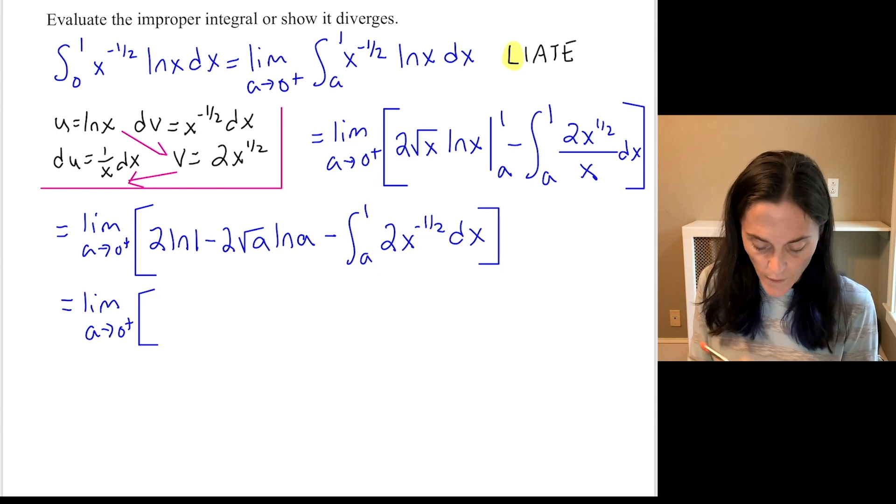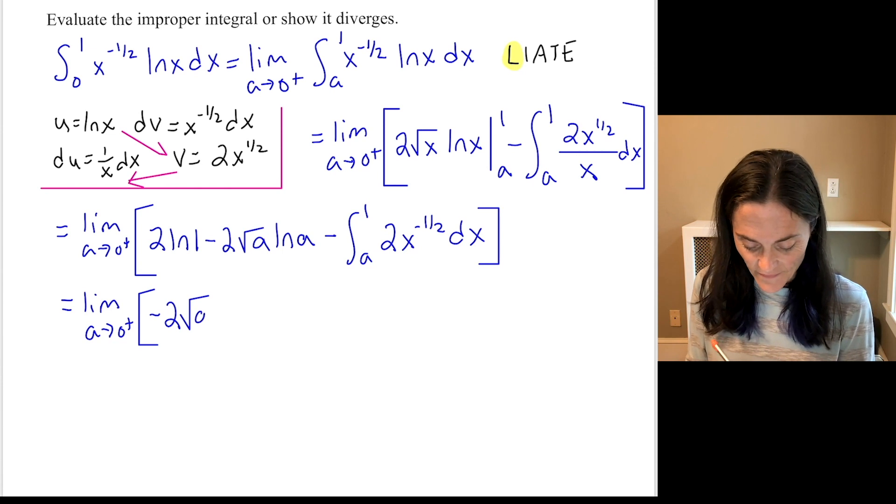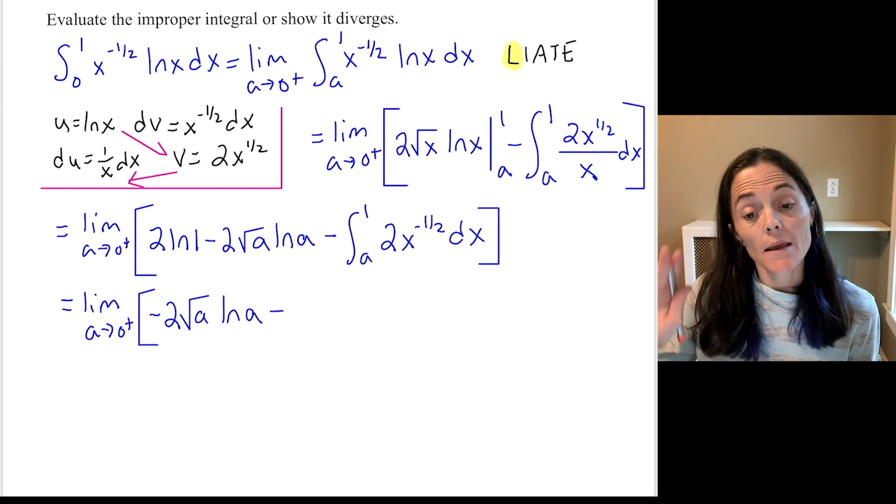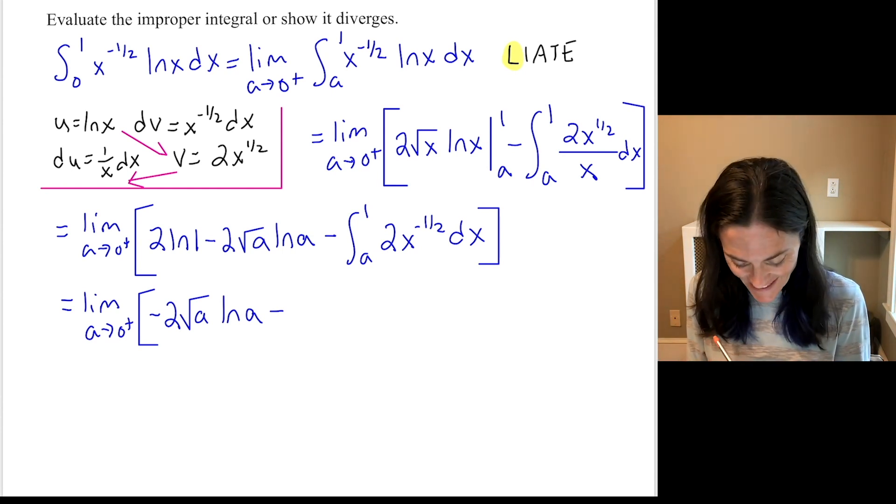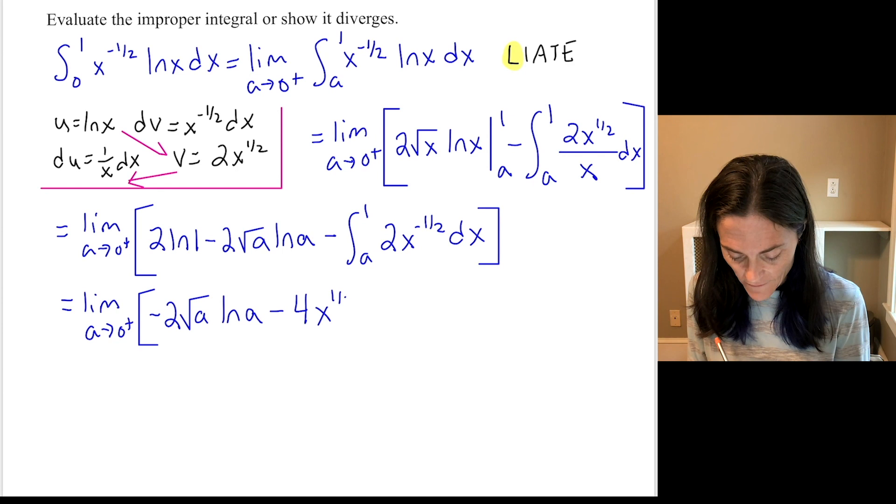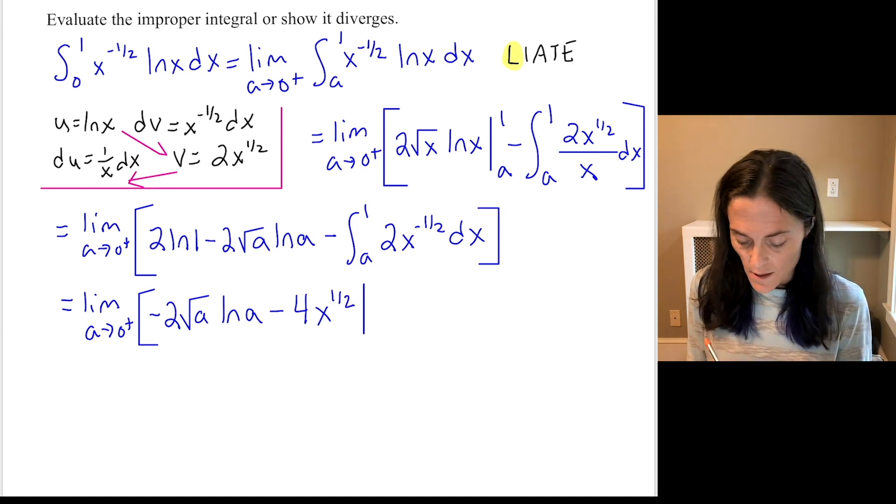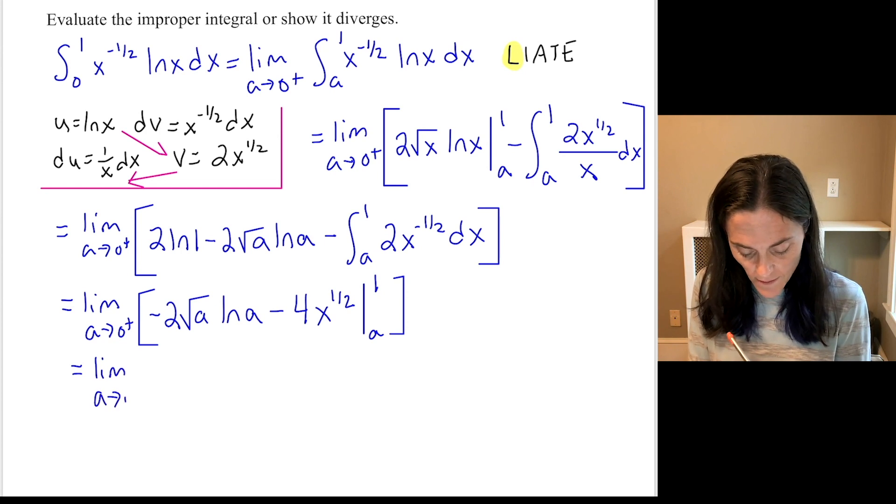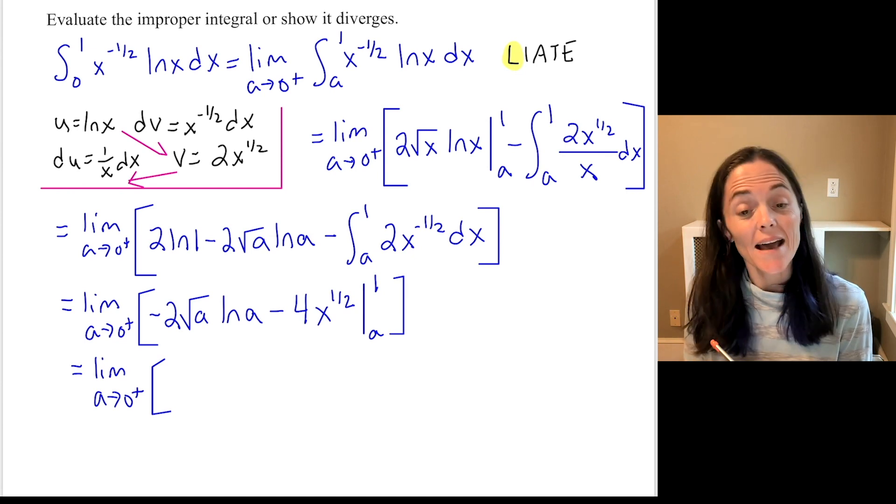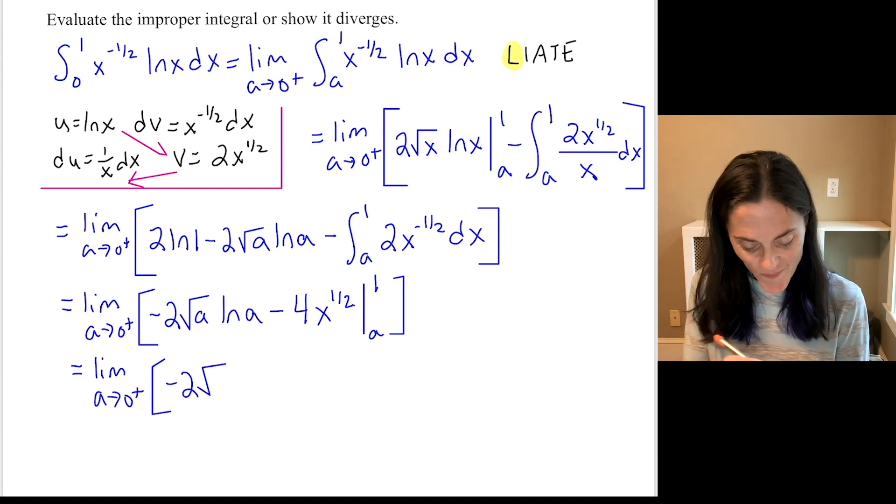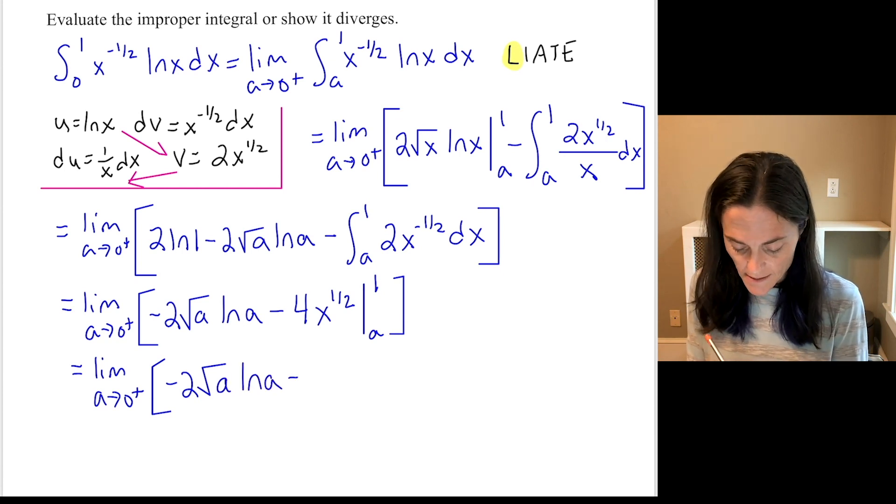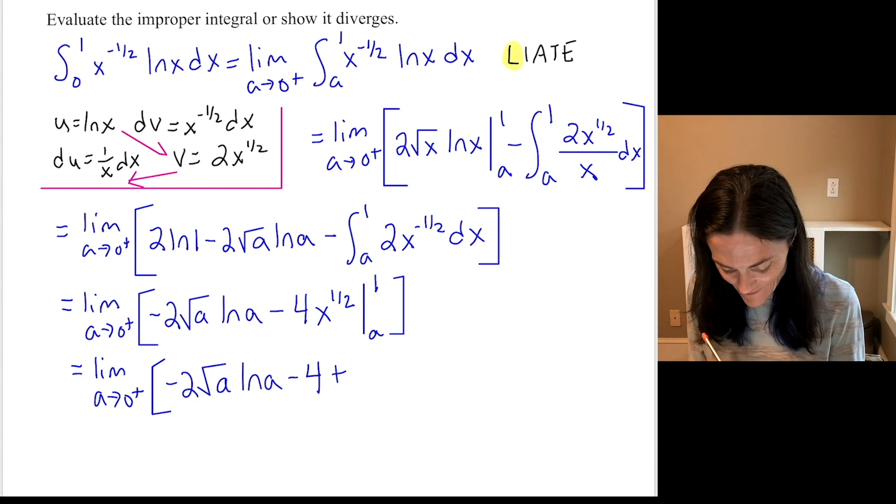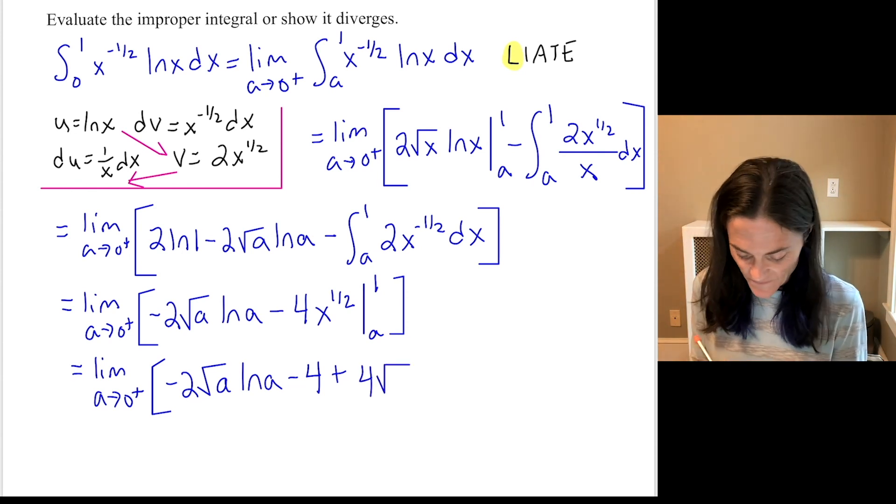Next step. We have minus 2 square root a ln a. When we integrate, once again we add a power, divide by the higher power. So this will be x to the 1 half and then times 2 times 2. So we have altogether 4x to the 1 half. And we evaluate between a and 1. We have a limit as a approaches 0 on this side. Coming from the right. We have minus 2 square root a ln a. We have minus 4 times the square root of 1 and then plus 4 square root of a.